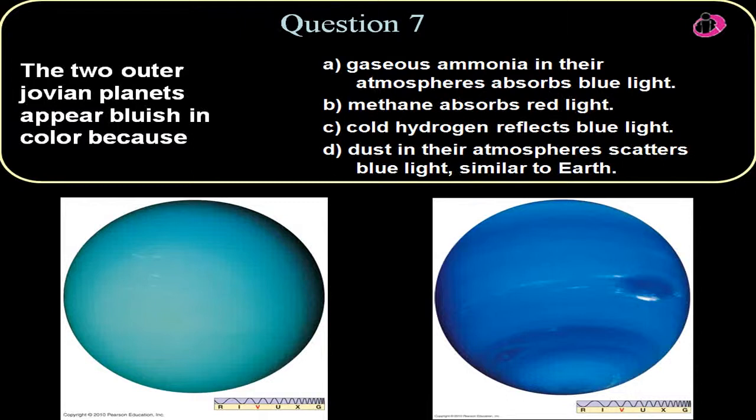And this is because in their atmospheres they have methane. Methane absorbs red light and gives off or gives the appearance more of a bluish color. So because of the presence of methane, 2% in Uranus and 3% in Neptune, that absorbs red light giving off a more bluish color and that's why they appear blue.